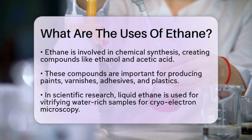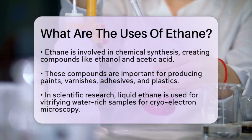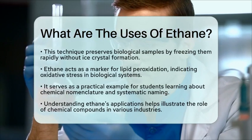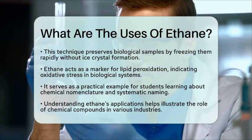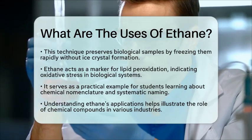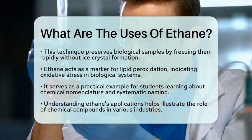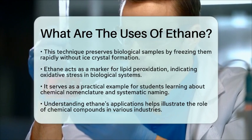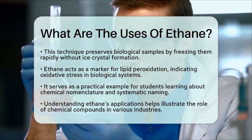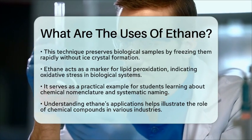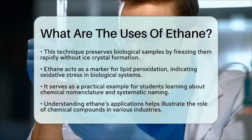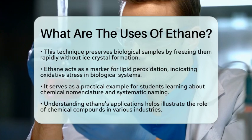In the context of chemical nomenclature, ethane is a great example for students learning about systematic IUPAC names. The name ethane comes from the prefix 'eth,' which signifies two carbon atoms, and the suffix 'ane,' indicating single bonds. This naming convention helps students grasp how to systematically name hydrocarbons.